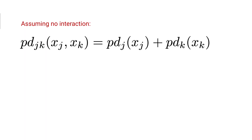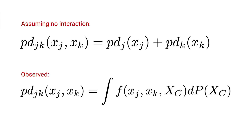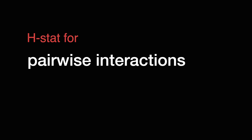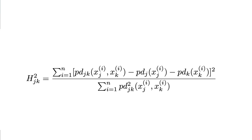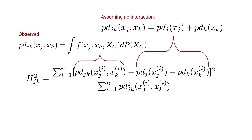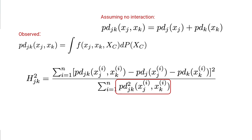So that explains the equation for the PD under the assumption that there is no interaction. Now let's see how we compare it to the observed joint PD. This equation gives the H-stat for the interaction between two features, J and K. In the numerator, we have the value of the observed PD less the PD under the assumption there is no interaction. We square this so both positive and negative differences contribute to the H-stat. In the denominator, we normalize by dividing by the square of the observed PD, then sum these values over N instances.